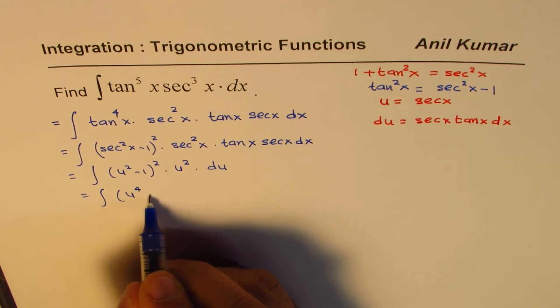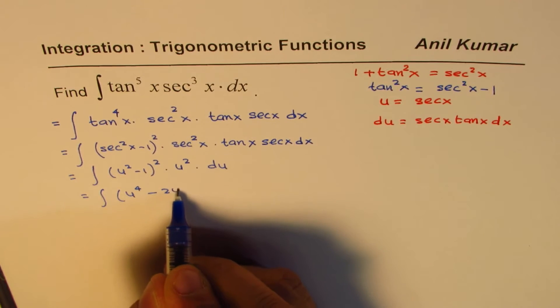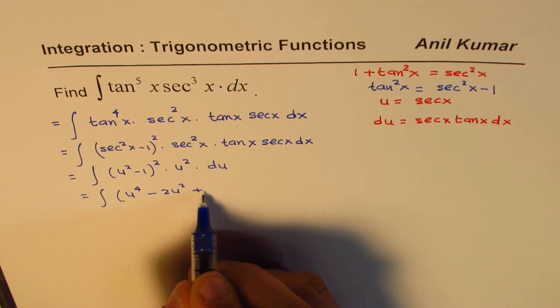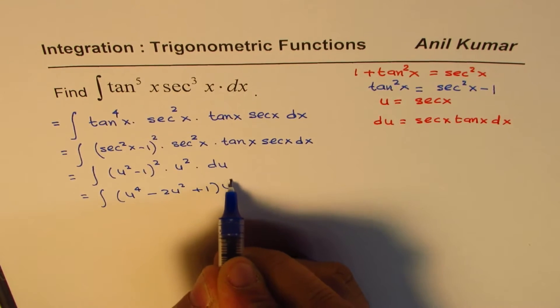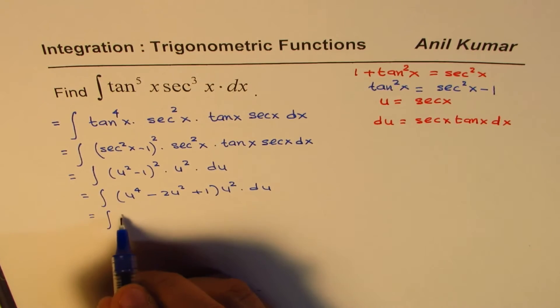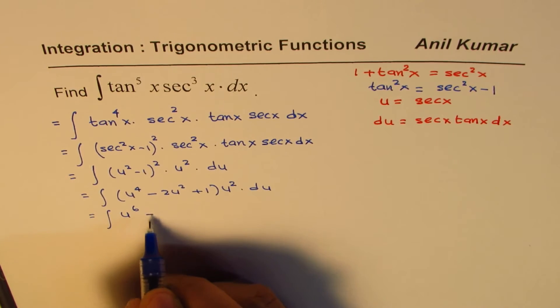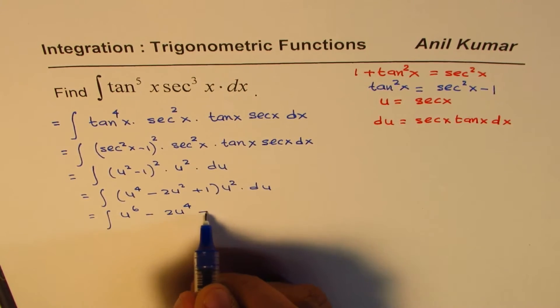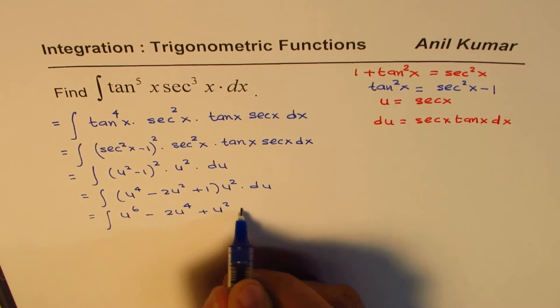So let us expand this. We have u to the power of 4 minus 2 u square plus 1 times u square du. That could be written as u to the power of 6 minus 2 u to the power of 4 plus u square du.